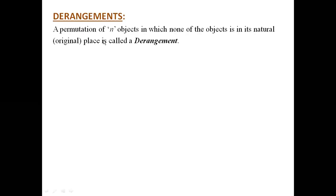First, let us see the definition for derangements. It is a permutation of n objects in which none of the objects is in its natural place or the original place. So it is a concept of arrangement — permutation — that is arrangement of n objects, and we will see to it that none of the objects are in its original place. And that is the derangement.